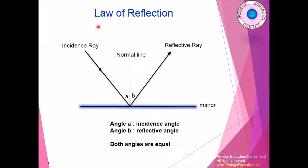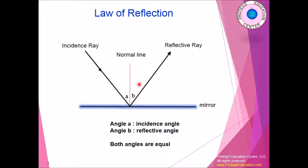Now we'll talk about light and reflections. The law of reflection says that the incident ray is your light source coming in. If you have a flat mirror, the light reflects off the surface as a reflected ray. If you draw a line perpendicular to the mirror at the point of contact — called the normal line — the angle between the normal line and the incident ray, called the angle of incidence, will be equal to the angle of reflection.